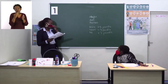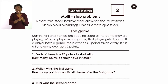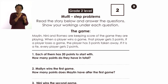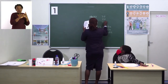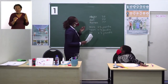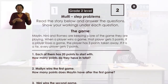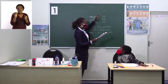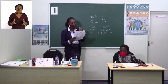Let's now check our questions. We are going to do number one and two. What does number one say? Each of them has 20 points to start with, which means Marilyn 20, Nini 20, Romeo 20. How many points do they have in total? It means 20 plus 20 plus 20. This is how we are going to do number one.